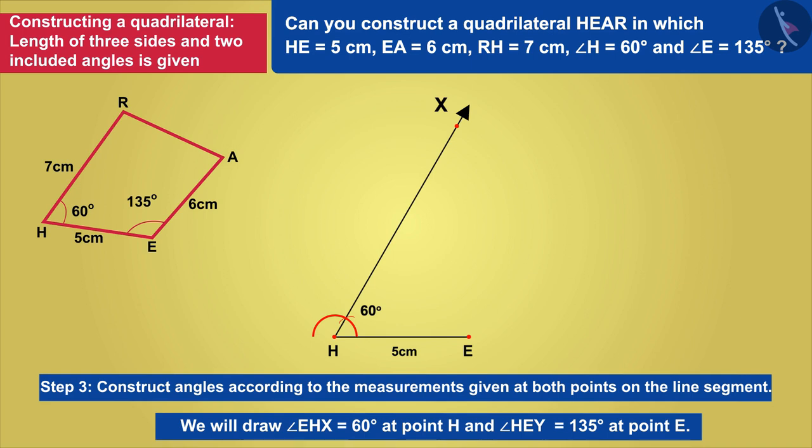We will draw HEY. Friends, how shall we make this angle? We know that 135 degrees is equal to 90 degrees plus 45 degrees. We have to make an angle of 90 degrees. Let us make an angle of 90 degrees PEH at point E.